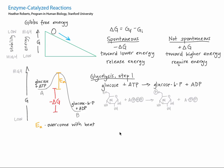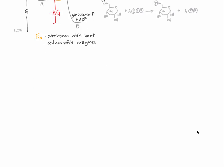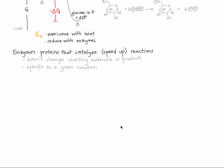Instead, we use enzymes to increase the likelihood that reactions proceed. Enzymes are proteins that catalyze reactions. To catalyze a reaction means to make that reaction occur more quickly. Catalysis does not change the starting materials or the products — it only makes the conversion from one to the other more likely. Enzymes do this by tightly and specifically binding the starting materials, called the substrates.